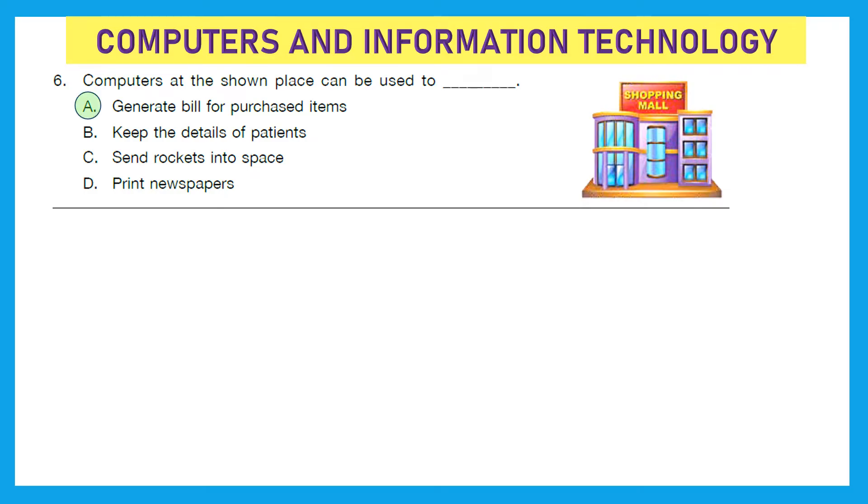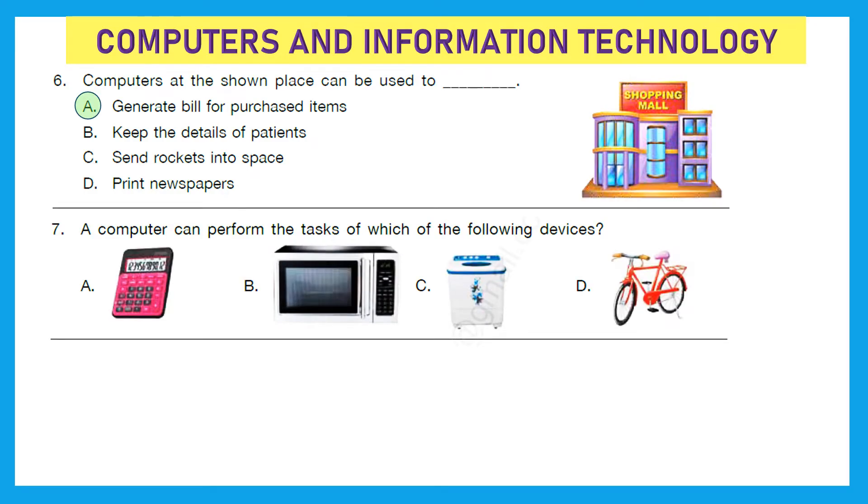Question 7: A computer can perform the tasks of which of the following devices? A calculator, B microwave, C washing machine, or D cycle. And the right answer is option A, calculator. All the work done by a calculator can also be performed by a computer.